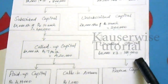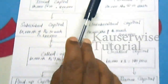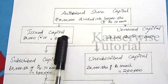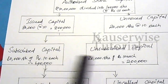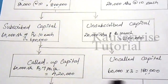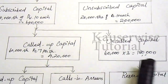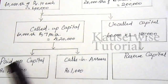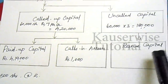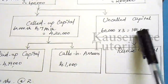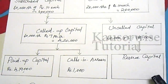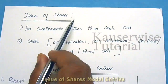To summarize the capital structure: authorized capital contains issued and unissued capital; issued contains subscribed and unsubscribed; subscribed contains called up and uncalled; called up contains paid up and calls in arrears; and reserve capital comes under uncalled capital, utilizable at the time of dissolution.